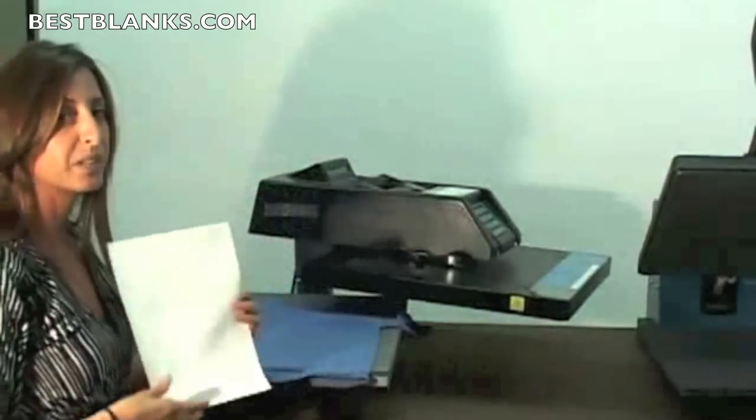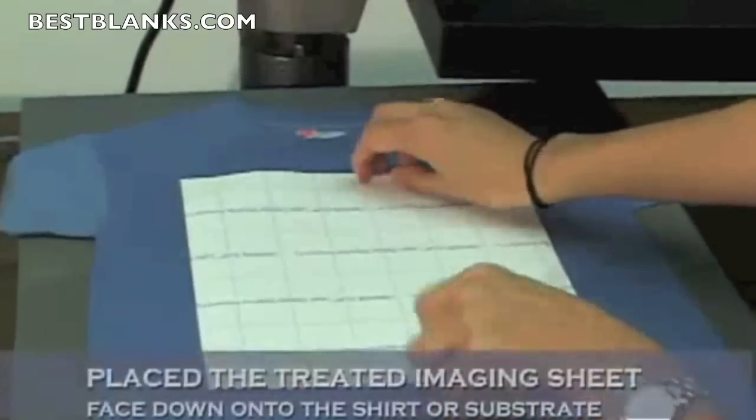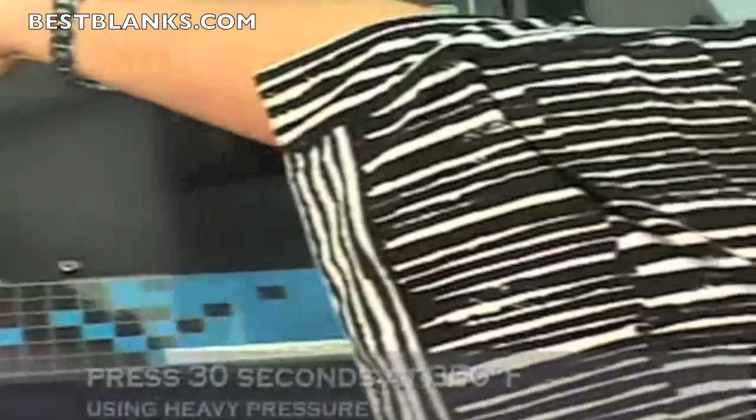Next you'll take your image sheet, place it face down on the shirt, and press it at 350 for 30 seconds.